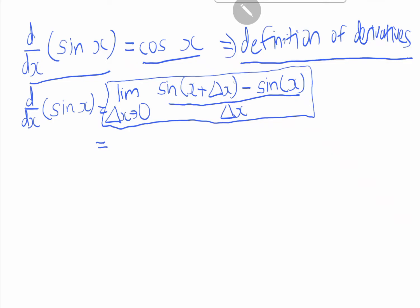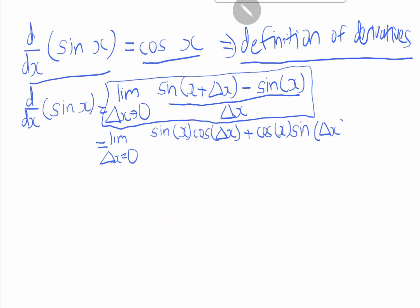Further simplifying, we can expand using the trigonometric addition formula. So this equals the limit as delta x goes to 0 of: sin x cos(delta x) plus cos x sin(delta x), minus sin x, all over delta x.